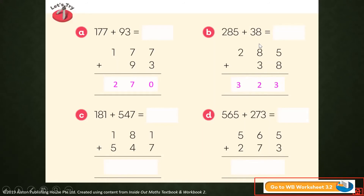Next, letter C: 181 plus 547. 1 plus 7 equals 8. 8 plus 4 equals 12, carry 1. 1 plus 1 plus 5 equals 7. So the answer is 728. Next: 5 plus 3, 6 plus 7 equals 13, carry 1. 1 plus 5 plus 2 equals 8. Answer: 838. Very good.